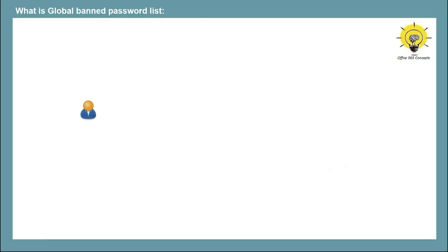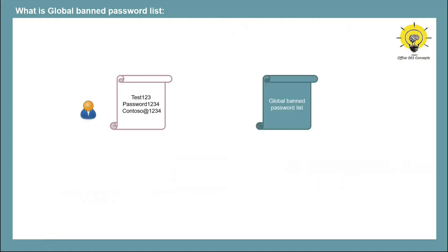When it comes to choosing a password, users can choose any password of their choice — it can be as simple as Test1234, Password1234, or even the name of their organization, for example, Contoso@1234. But these types of passwords are very common and can be hacked easily. Azure Active Directory maintains a global banned password list that automatically detects and blocks weak passwords. Whenever a weak password or a basic term is used, these terms are automatically added to the global banned password list. As an administrator, you cannot modify this list or disable it. This list is enabled by default and is applied to all users and administrator accounts in your Azure AD tenant.